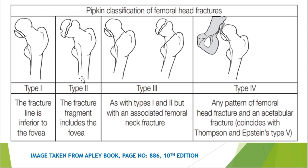Any fracture of this pattern is classified as Pipkin type 1. When the fracture passes through the femoral head and includes the fovea centralis — or is superior to it — we call it type 2. So: fracture line inferior to the fovea centralis is type 1, and superior to the fovea centralis is type 2.